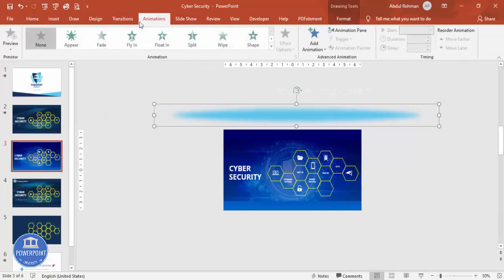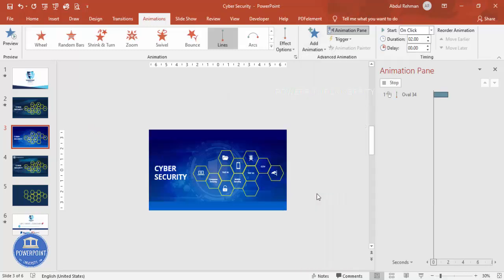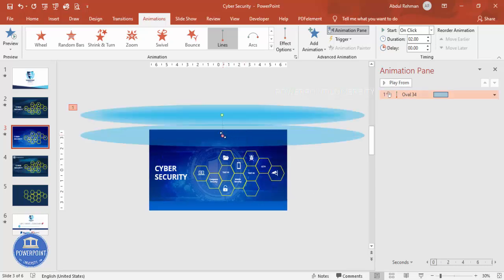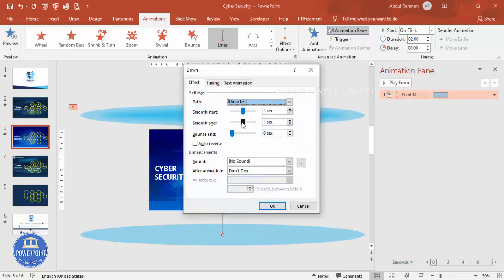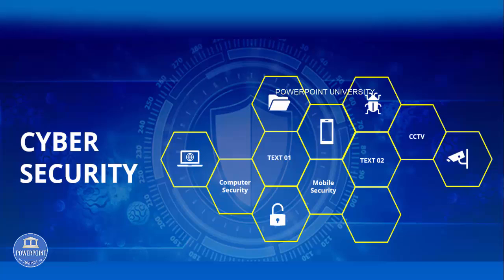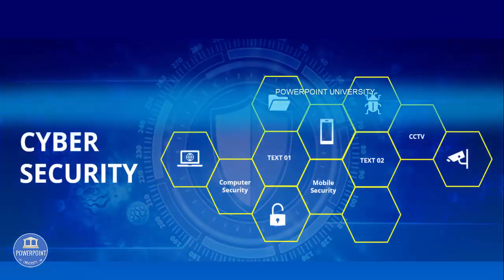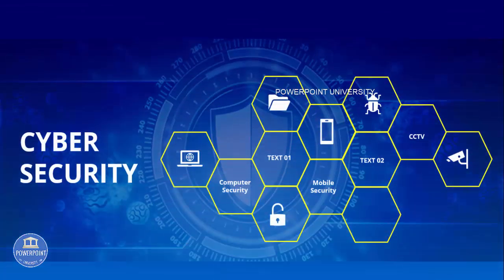With the oval selected, go to Animations, enable the Animation Pane, and click Add Animation. Scroll down to Motion Paths and select Line. Drag the red endpoint downward while holding Shift to set the path. Double-click the animation, set Smooth Start and Smooth End to zero, enable Auto Reverse, set timing to Medium, set Repeat to Until End of Slide, and click OK. The oval will now scan up and down continuously.